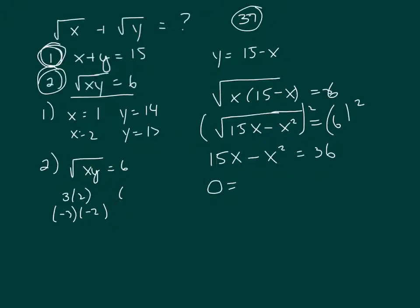Get 0 on one side. Move everything to the right. I move everything to the right because I want my leading coefficient to be positive. x squared minus 15x minus 36.